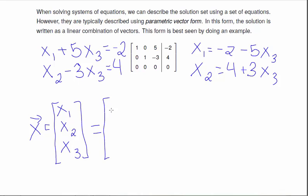So x1 is negative 2 minus 5x3, x2 is 4 plus 3x3, and we don't know anything about x3, so it just remains as x3.